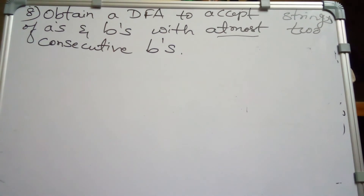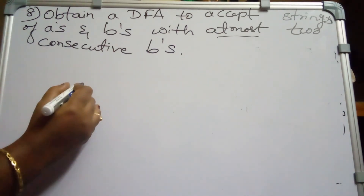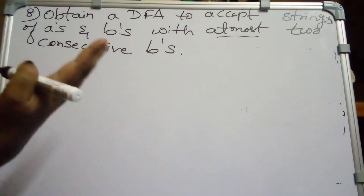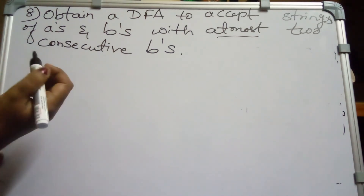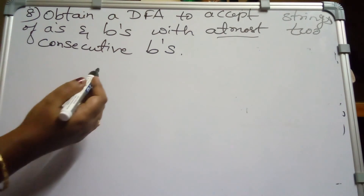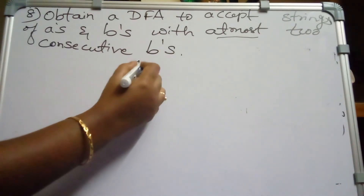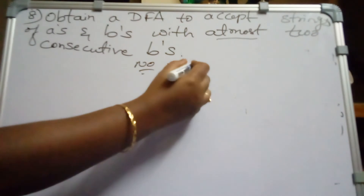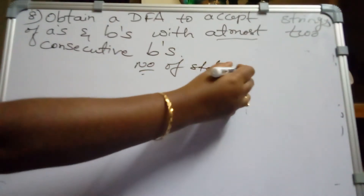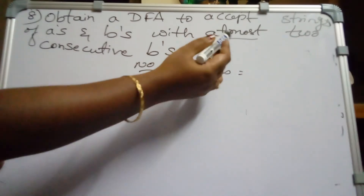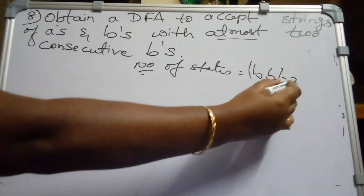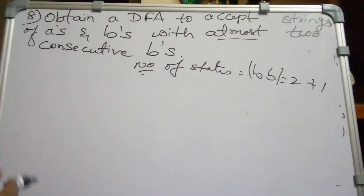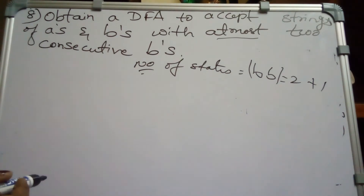To determine how many states the DFA needs, the minimal string is the one with exactly two B's. Number of states = length of minimal string + 1 = 2 + 1 = 3 states. So Q0 on reading B goes to Q1, and on the second B it goes to Q2.